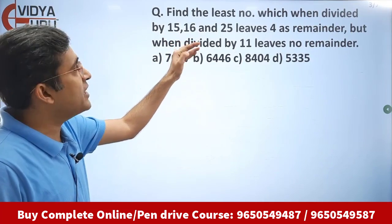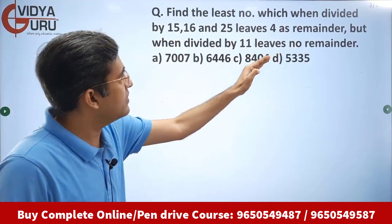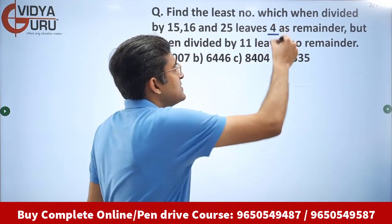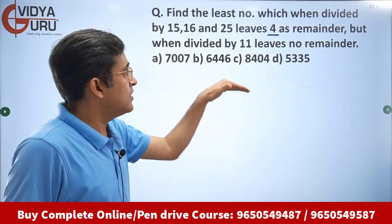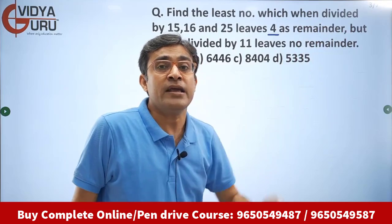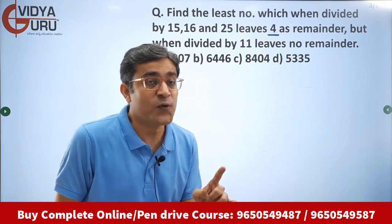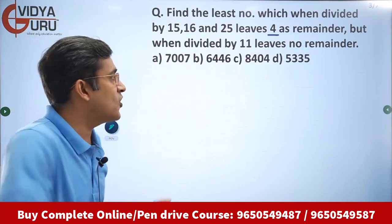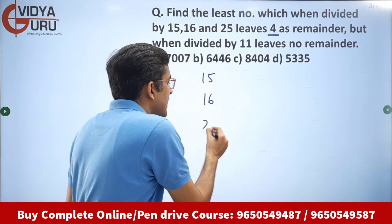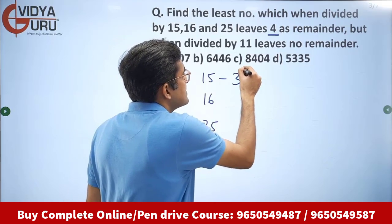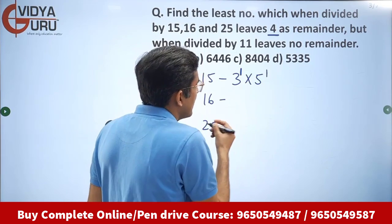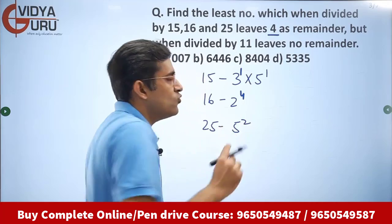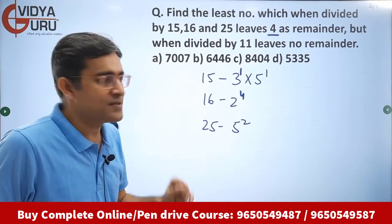Read the question on your screen. Find the least number which, when divided by 15, 16 and 25, leaves 4 as a remainder, but when divided by 11 leaves no remainder. To solve this, first we find the LCM of 15, 16 and 25. 15 can be written as 3 to the power 1 into 5 to the power 1. 16 can be written as 2 to the power 4. 25 is 5 to the power 2. Just express them as prime numbers.